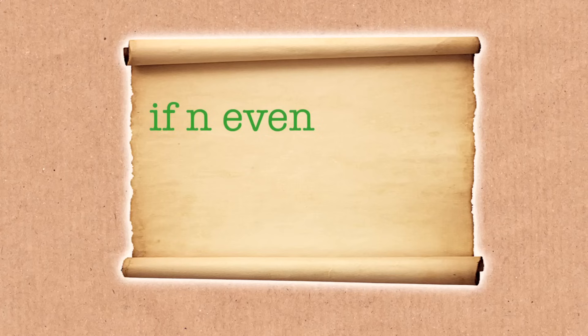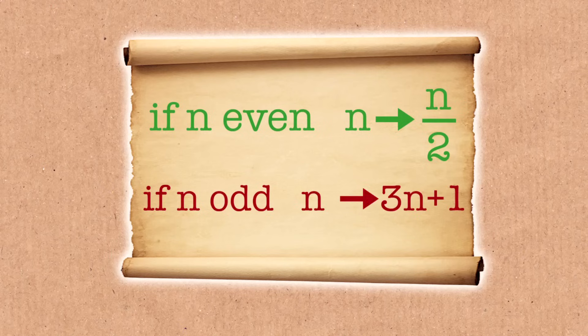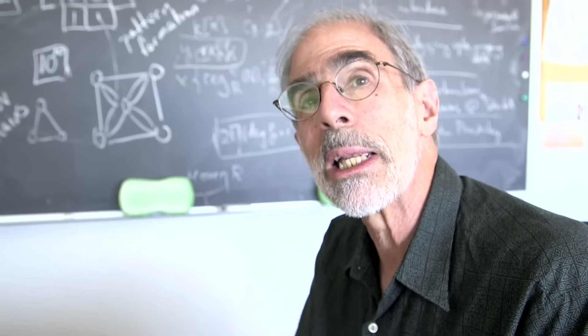If n is even, then I'm going to take n and divide it by 2. If n is odd, then I'm going to take n, can't divide it by 2 and get a whole number, so I'm going to take n and multiply it by 3 and add 1. Those are my rules.